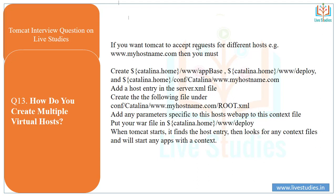Another question: how do you create multiple virtual hosts in Tomcat? If you want Tomcat to accept requests for different hosts such as www.myhostname.com, you must configure Catalina with an appBase. You need to create entries in the server.xml file, and create a context file at conf/Catalina/www.hostname.com/ROOT.xml. Add any parameters specific to that host's web app to the context file, and put your WAR file in the Catalina home deploy directory. When Tomcat starts, it finds the host entry, looks for any context files, and starts any apps with those contexts.